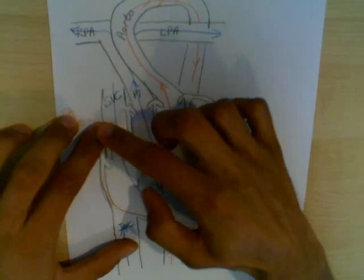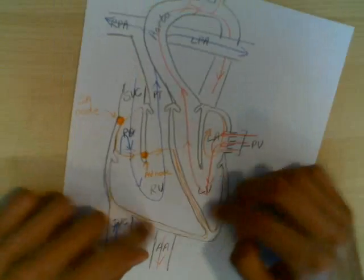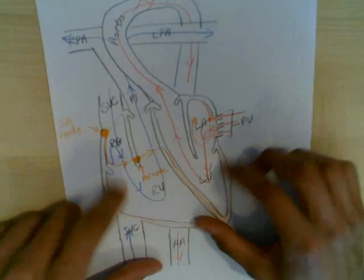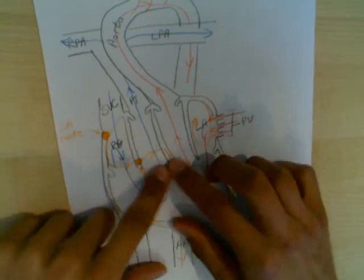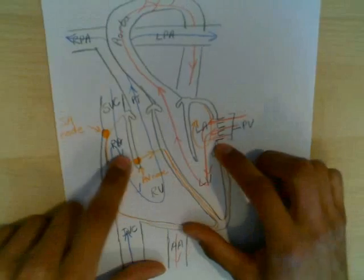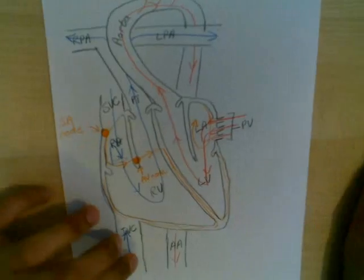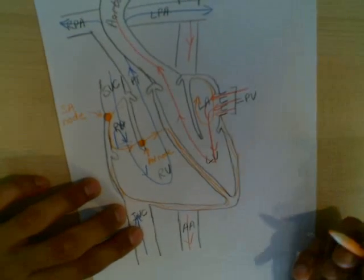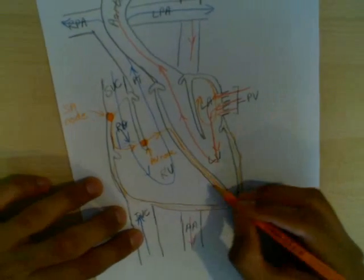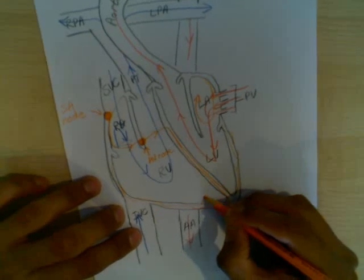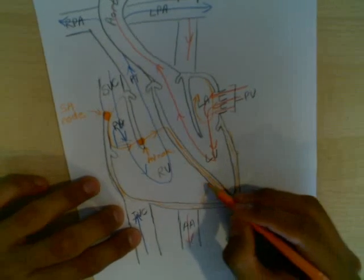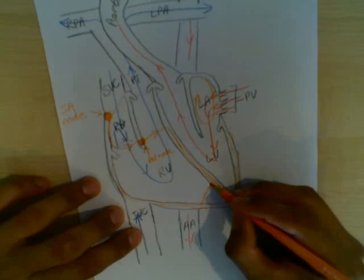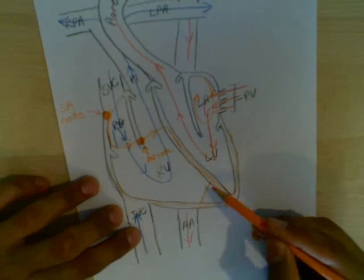So a heartbeat would be: boom, boom — atria contraction — boom, boom — ventricular contraction. It basically works something like that. The only other thing I'll mention is that there is a small band of tissue going through here, containing an extra bit of electro-conductive cells. This is known as the moderator band.